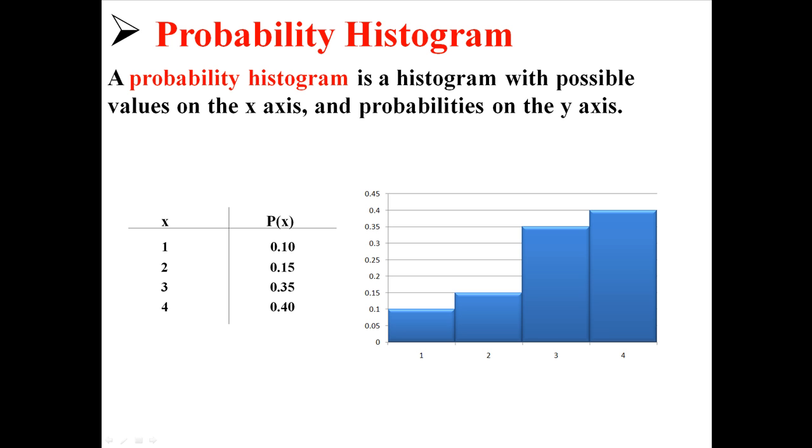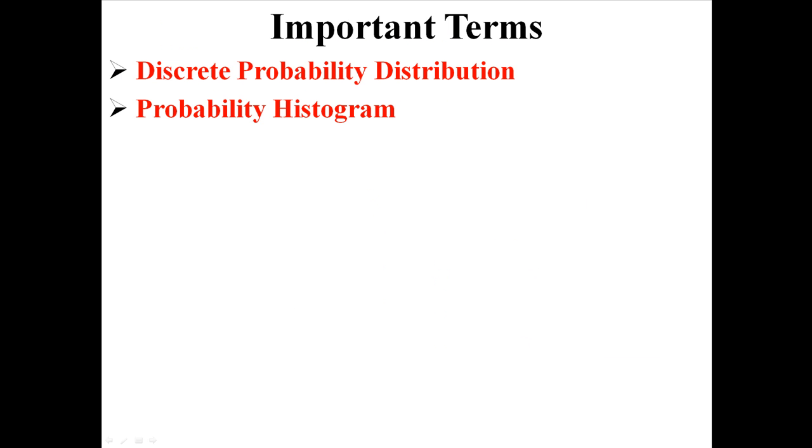So what we can do is organize this into a histogram. On the bottom I have the events 1, 2, 3, and 4. And on the y-axis I have the probabilities that are associated with those events. Notice that the bars are touching because this is a histogram, not a bar graph. And that is a probability histogram using a discrete probability distribution.